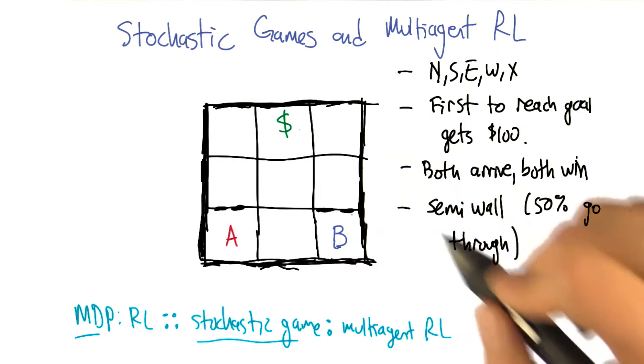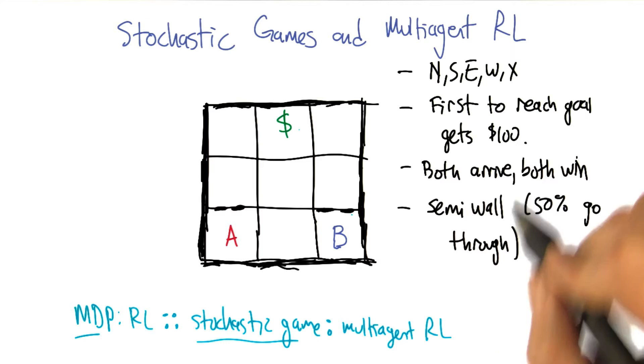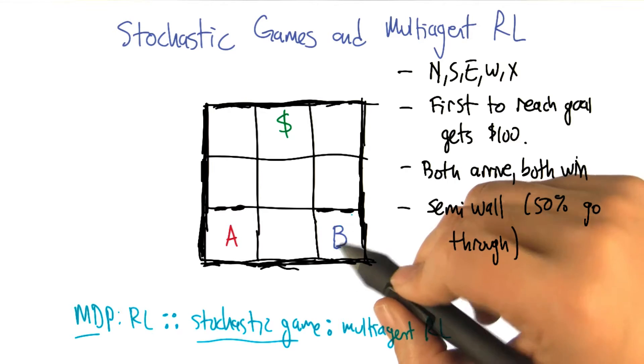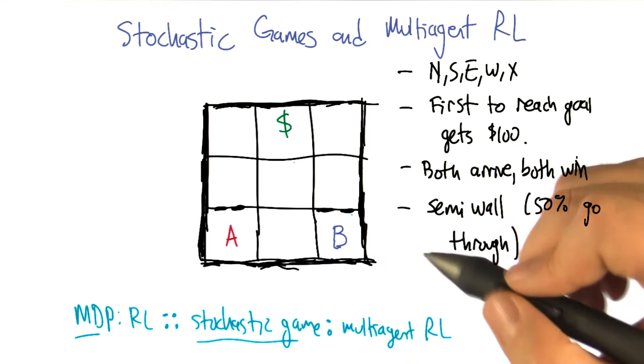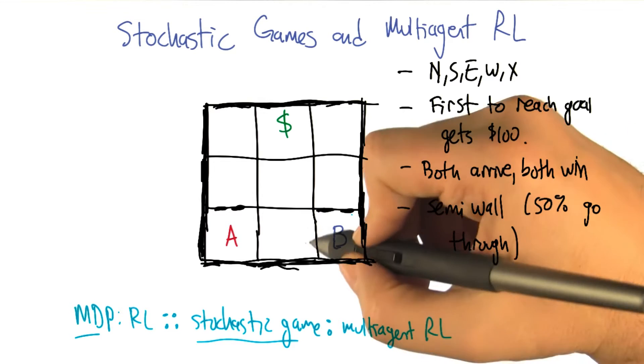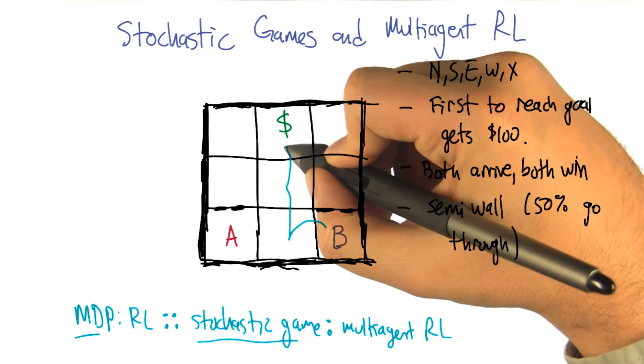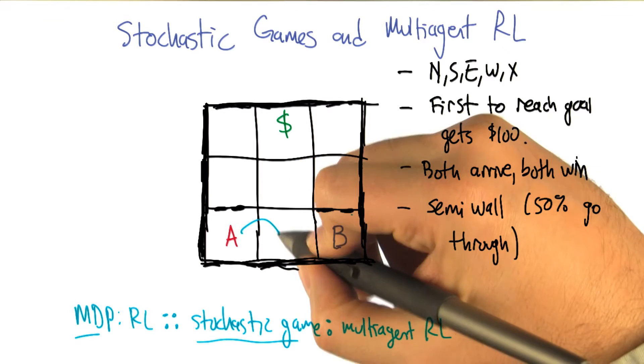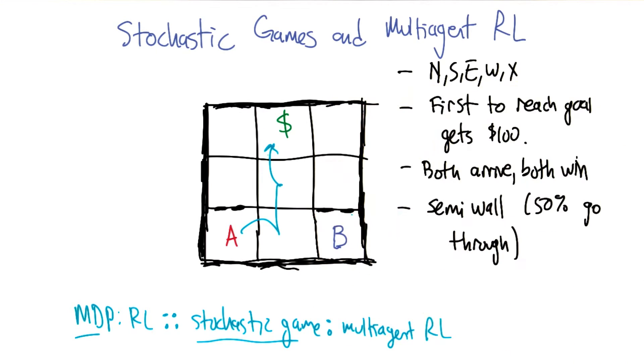So the goal is to get to the dollar sign. And if you get to the dollar sign, you get $100. So if we ignore A for a second, what should B do to minimize the number of steps necessary to get the reward? Go left and then go up and go up. I'm sorry, go west and then go north and then go north. Yeah. And what should A do, ignoring B? Go east and then go north and then north. Yeah.